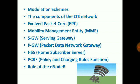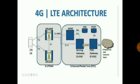Now we are going to talk about components of the LTE network. A standard LTE architecture consists of evolved UMTS terrestrial radio access network and evolved packet core, i.e. EPC. The evolved universal terrestrial radio access network consists of the following things: